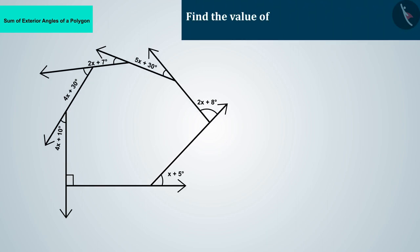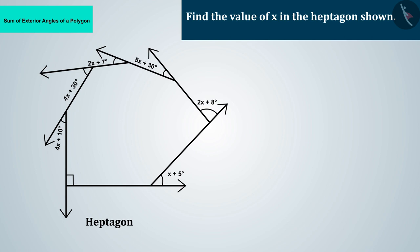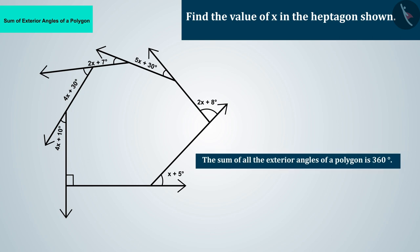Find the value of x in the heptagon shown. It is said in the question that the given figure is a heptagon. And we know from the previous video that the sum of all the exterior angles of a polygon is 360 degrees.